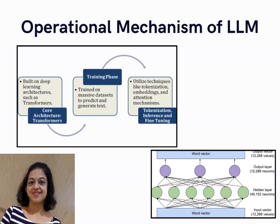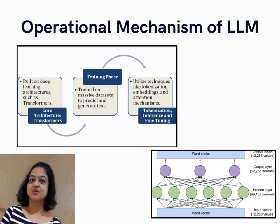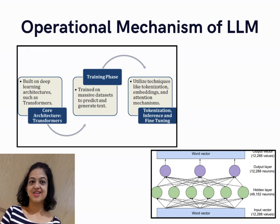The hidden layer contains 49,152 neurons and is responsible for capturing intermediate patterns in the data. Each neuron in the hidden layer connects to all input neurons, forming a dense layer. The connections have associated weights that are learned during training to identify patterns in the word vector data. The output layer has 12,288 neurons, matching the dimension of the word vector. This layer maps the hidden layer's learned features to an output vector, which could represent probabilities, transformed embeddings, or other predictions depending on the task.